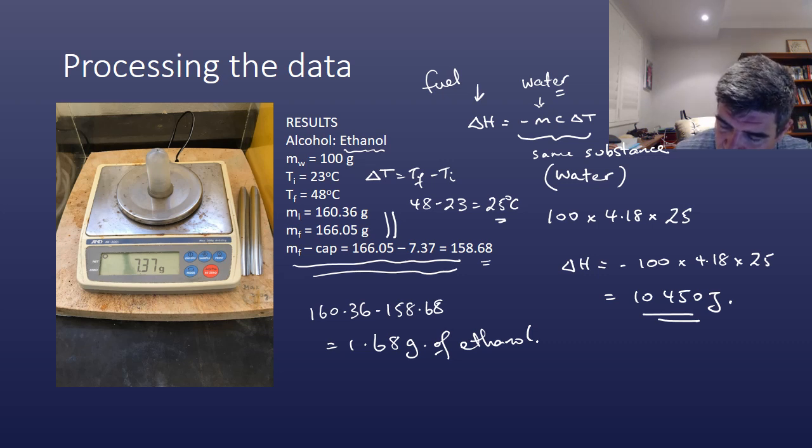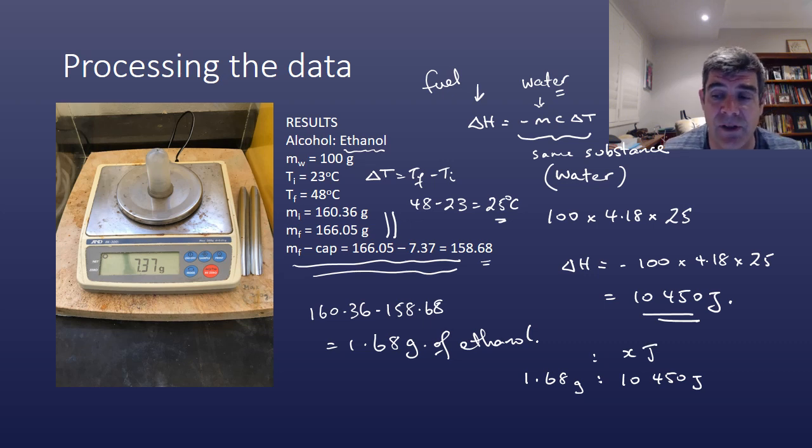The easiest way for us to do this is to say 1.68 grams is to 10,450 joules as 1 mole is to x joules. It's often useful at this point to convert these into kilojoules, because the numbers are very big, and it just makes them a little bit easier to work with.